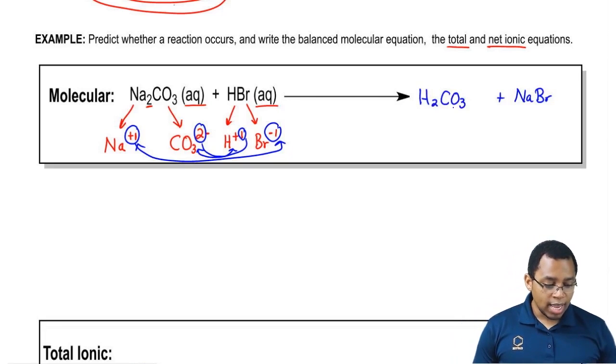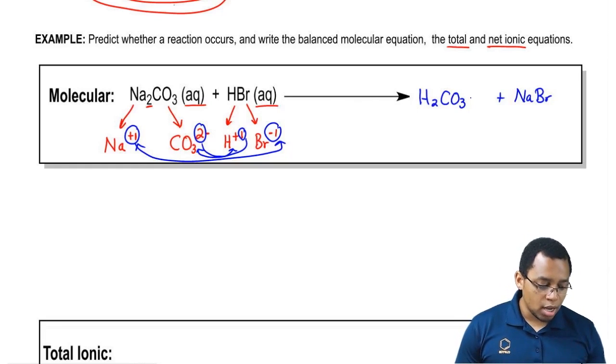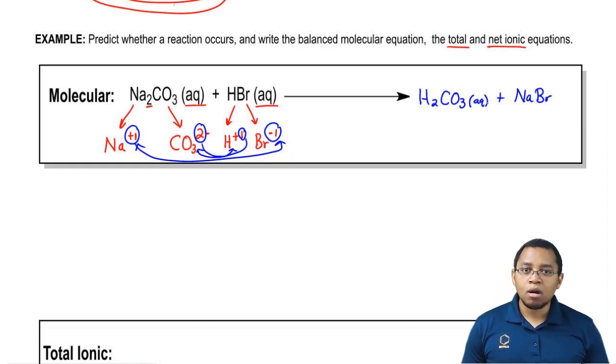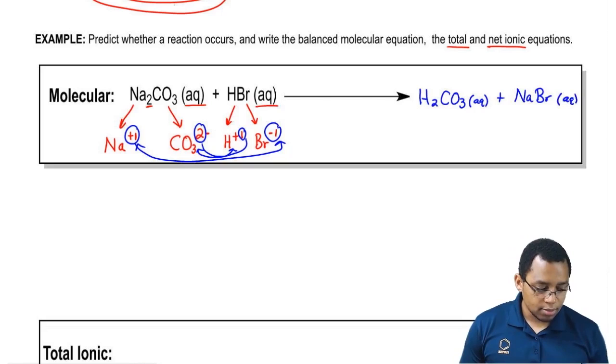Now, based on the rules, we're going to say carbonates are soluble when they're with group 1A ions. Hydrogen happens to be a group 1A ion, so this will be soluble, this will be aqueous. And then for NaBr, group 1A ions such as sodium are soluble with everyone. So this is also aqueous.